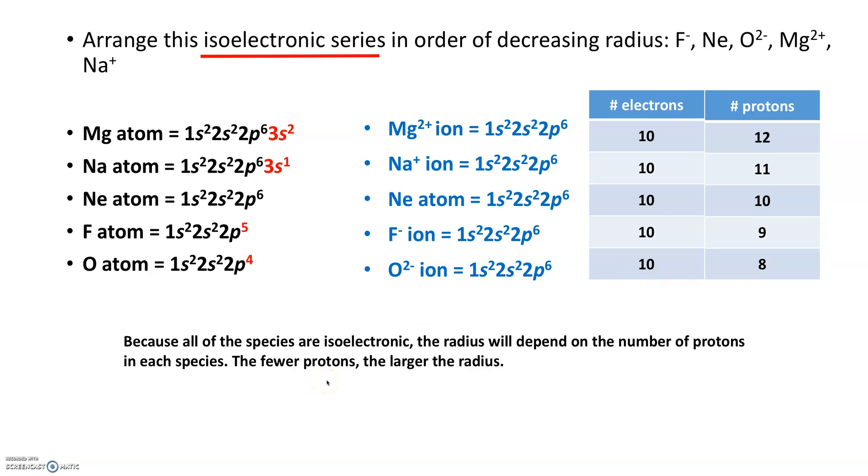Reading left to right, ranking this from decreasing radius, I see that the oxide ion is the biggest, then the fluoride, then neon, then sodium, and then magnesium.